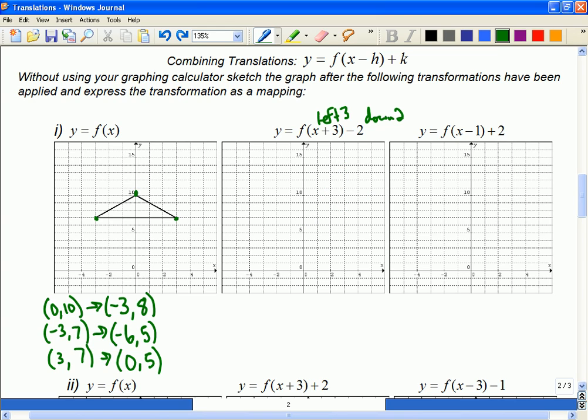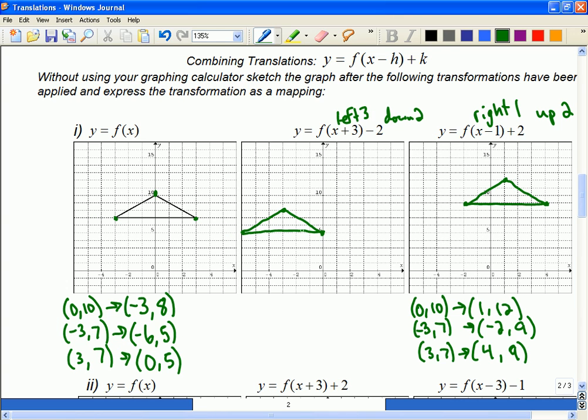Negative 3, 8 is here. Negative 6, 5 here. Negative, sorry, and then 0, 5 is here. So, okay, yeah. There's the same triangle that's been moved left three and down two. Well, to the best of my lacking artistic abilities. Okay. So you try the next one. I'm going to do it while you do it, and then we'll see how we've done.